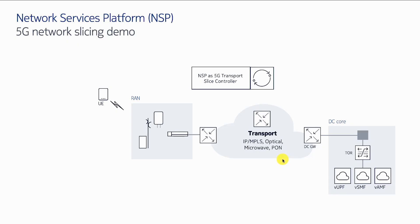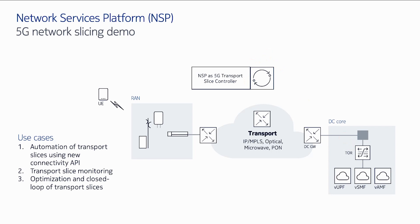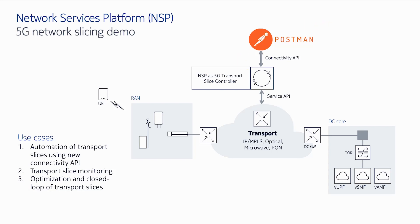For the demo, I will show you a transport network connected to RAN and core. NSP as a 5G transport slice controller is present, and the use cases are automation of transport slices, monitoring of transport slices, and how we can use NSP for optimization. During the demo, Postman is simulating the various actions or APIs that in a normal case we receive from the end-to-end network slice orchestrator. NSP receives those APIs, intelligently finds what resources should be created in the network, and sends the service tunnel path API to the network.